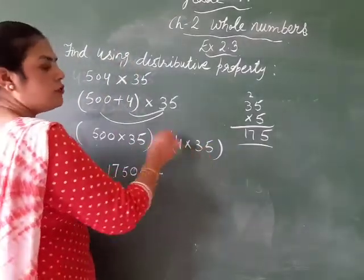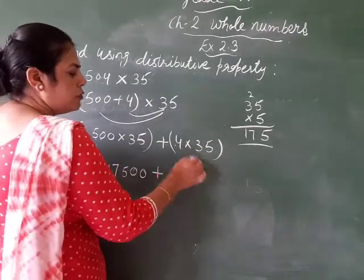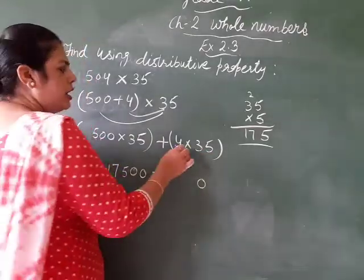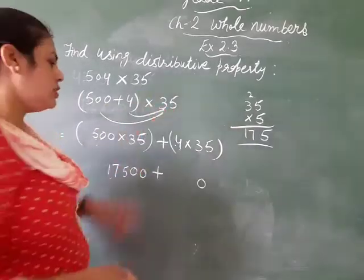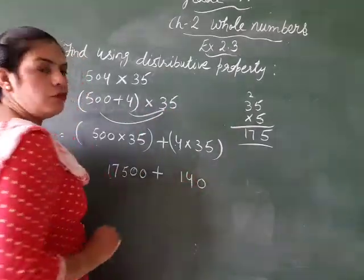Plus, we multiply 35 by 4. 5 times 4, 20 to carry, 3 times 4 is 12, and 2 carry was there, that is 14. So, 140.